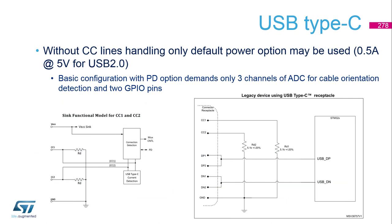If you want to use the advantage of the reversible connector and also improve the power capabilities of your current or new design, it is very easy to adapt using only two resistors. Such a configuration is shown on the picture, and more details can be found in the USB Type-C specification or in ST application note AN4775.